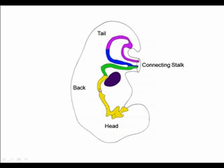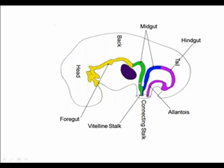Looking at just the gut tube, we can identify the foregut in yellow, the midgut in green and blue — with a cephalic and a caudal part — and in purple the hindgut, the expanding cloaca, and the allantois. We now need to discuss what happens to each segment of the gut tube, beginning with the foregut.